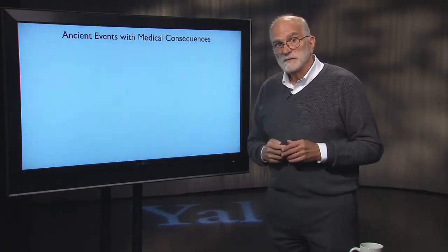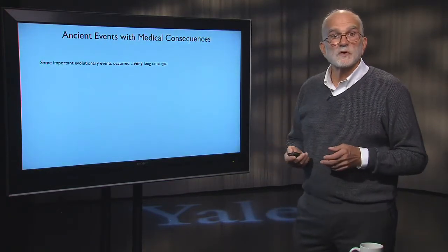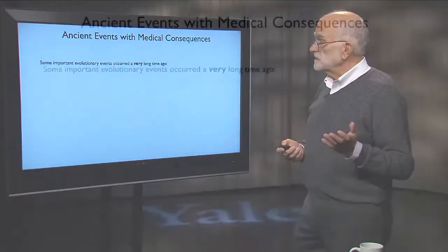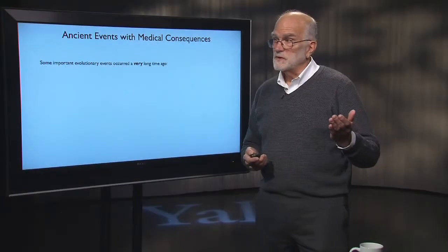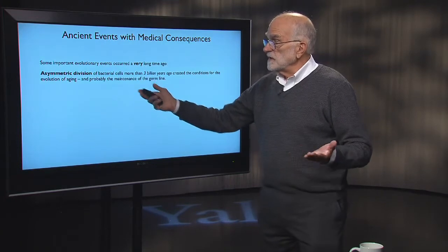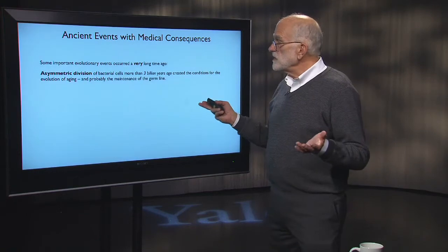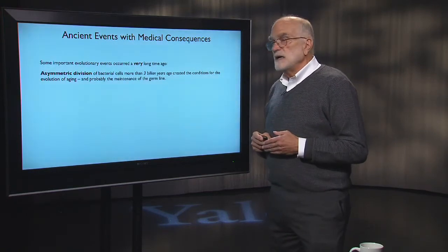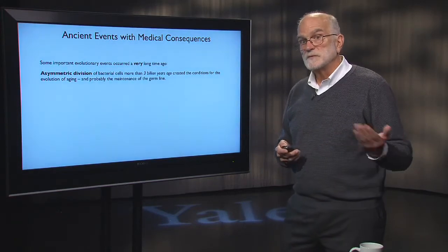There are ancient events that have had important medical consequences. Some of them occurred a very long time ago. You have to be careful when an evolutionary biologist talks about time — I might say something happened relatively recently and mean only 10,000 years ago. That's because we conceptualize things like the asymmetric division of bacterial cells, which originated more than 3 billion years ago, and it created the conditions for the evolution of aging, and probably for the maintenance of the germline up to the present.